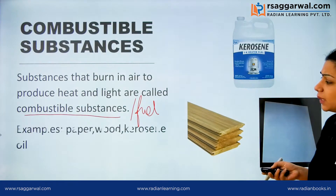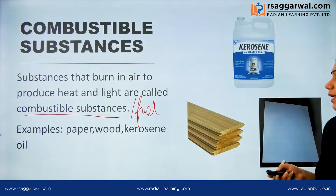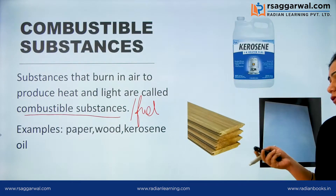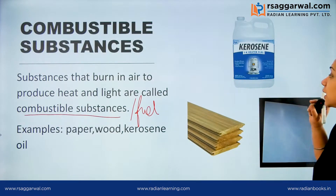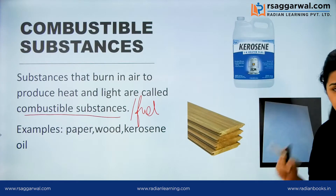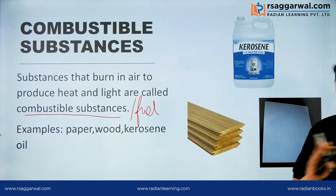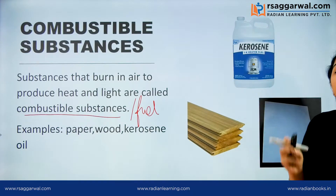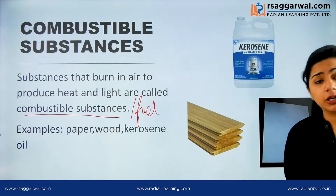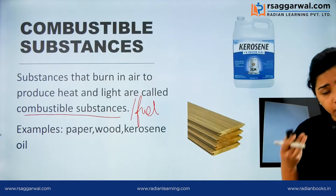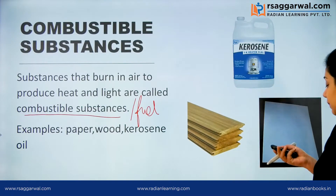So, examples of combustible substances are paper, wood, kerosene oil, etc. They need different temperatures to ignite, but they all burn the same way — they will give heat and light. That is what we call combustible substances.